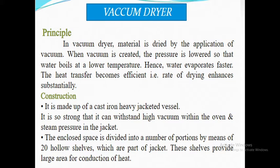Construction of vacuum dryer: it is made up of cast iron, heavy jacketed vessel. Because vacuum is created, it must be strong enough to withstand high vacuum within the oven and steam pressure in the jacket. The enclosed space is divided into a number of portions by means of 20 hollow shells, which are part of the jacket. These shells provide large area for conduction of heat.